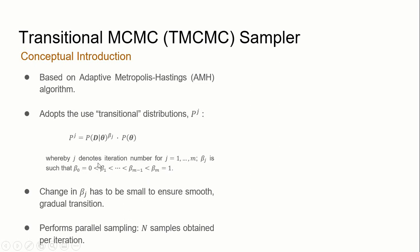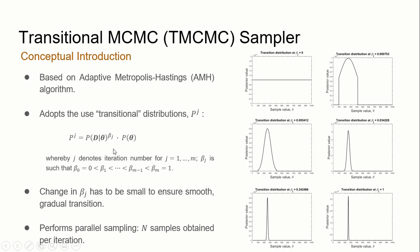By this logic, the transitional distribution transits from the initial prior when beta_j equals 0, to the posterior when beta_j equals 1. As an illustration, a series of distributions transit from a uniform prior to a sharp-peaked Gaussian posterior through a Gaussian likelihood function. For different values of beta_j, the transitional distribution changes in shape, tending closer to the Gaussian posterior as beta_j increases. To ensure a smooth and gradual transition, the change in beta_j must be small.